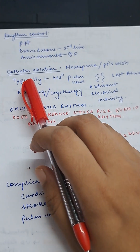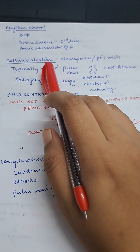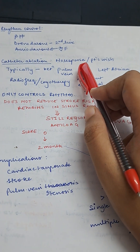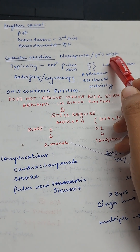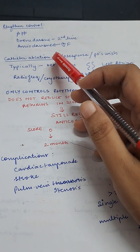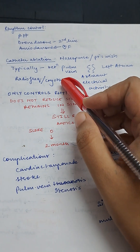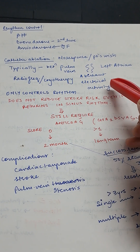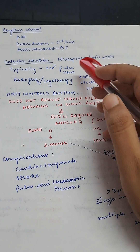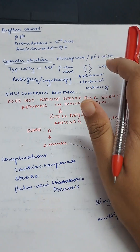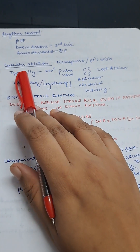Another treatment option is catheter ablation. Consider it when there is no response to rate or rhythm control, or if the patient prefers ablation over medication. The procedure uses radiofrequency or cryotherapy to ablate the aberrant electrical pathway between the pulmonary vein and the left atrium.